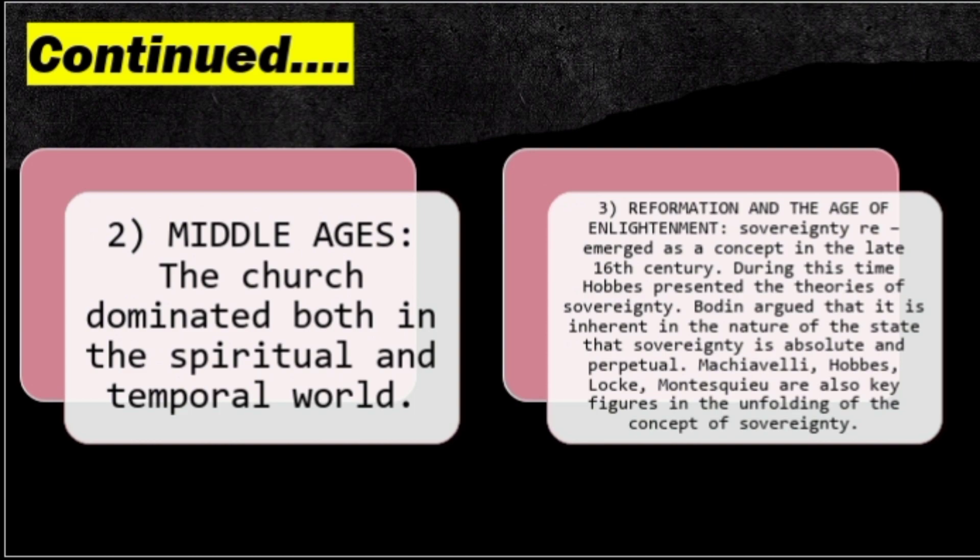In the Middle Ages, the church dominated both the spiritual and temporal world, whereas in ancient times it was the state and people that dominated. The church controlled both religious and worldly affairs. Then came the Reformation and the Age of Enlightenment — the Renaissance period — when sovereignty emerged as a concept in the late 16th century. Emperors and rulers took control of state affairs and subjugated the church to its own religious and spiritual sphere, as known through the writings of Thomas Hobbes and Machiavelli.